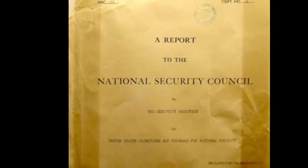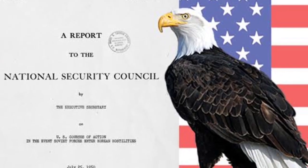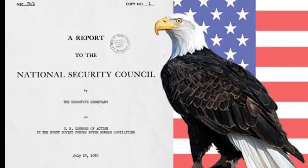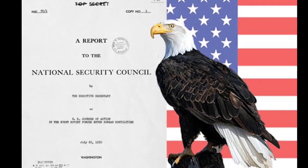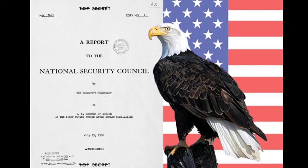In the early years of the Cold War, the United States faced a profound strategic challenge in formulating a comprehensive response to the perceived threat posed by the Soviet Union. In 1950, against the backdrop of escalating tensions, the National Security Council produced a groundbreaking document — NSC 68 — that would serve as a guiding blueprint for U.S. policy, outlining strategic objectives and ideological underpinnings that would shape American foreign policy for decades to come.